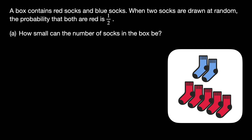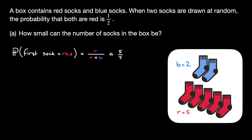Let's first look at an example and use it to define some decision variables. Let's set the variable b as the number of blue socks in the box, and the variable r as the number of red socks in the box. In our example, b is equal to 2 and r is equal to 5. We know that the probability that the first sock is red is simply equal to the number of red socks divided by the total number of socks in the box, which is r divided by r plus b — in this case, 5 sevenths.